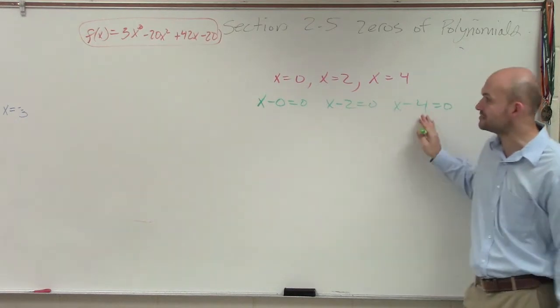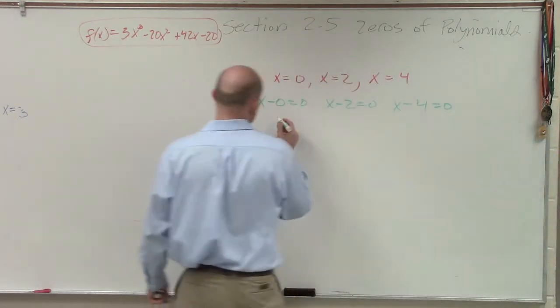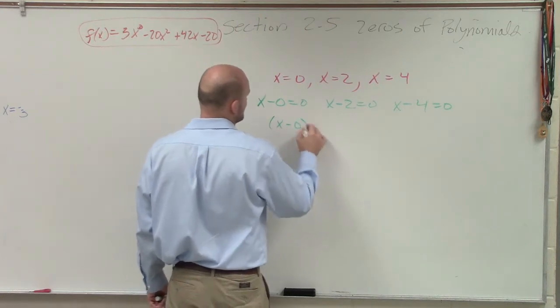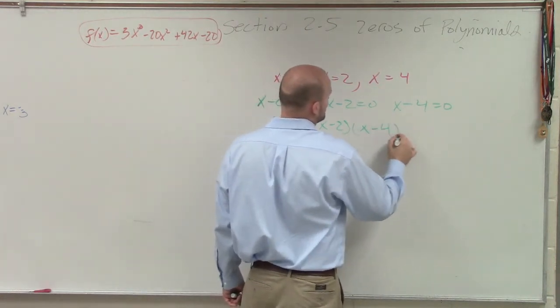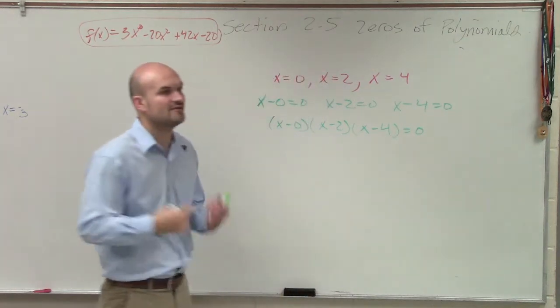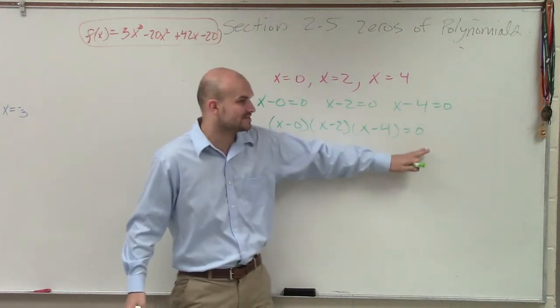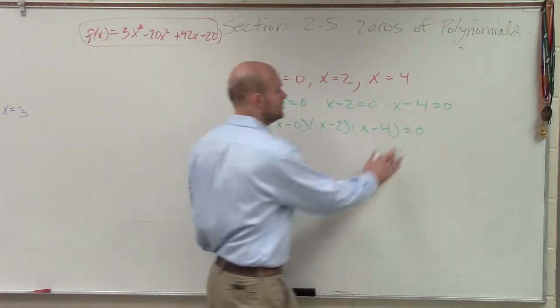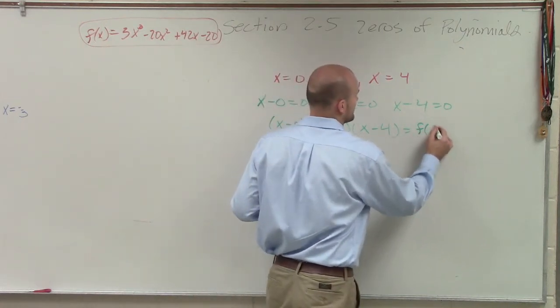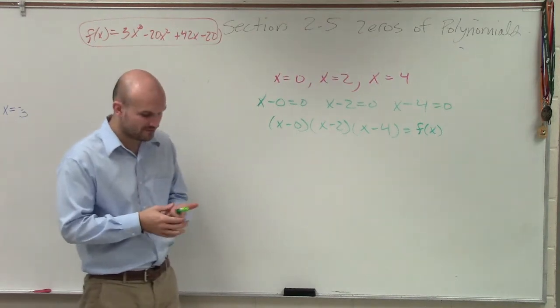But now, ladies and gentlemen, when we write these as factors equal to 0, we got that because we applied the zero product property. And the zero product property said that we can take our factors, when multiplied, equal to 0. But we only set it equal to 0 when we said find the 0s. We are given a polynomial. We factor them. We set it equal to 0 so we can find the 0s. But we're given the 0s. We want to find the polynomial. So I'm going to write in what is f of x, right?